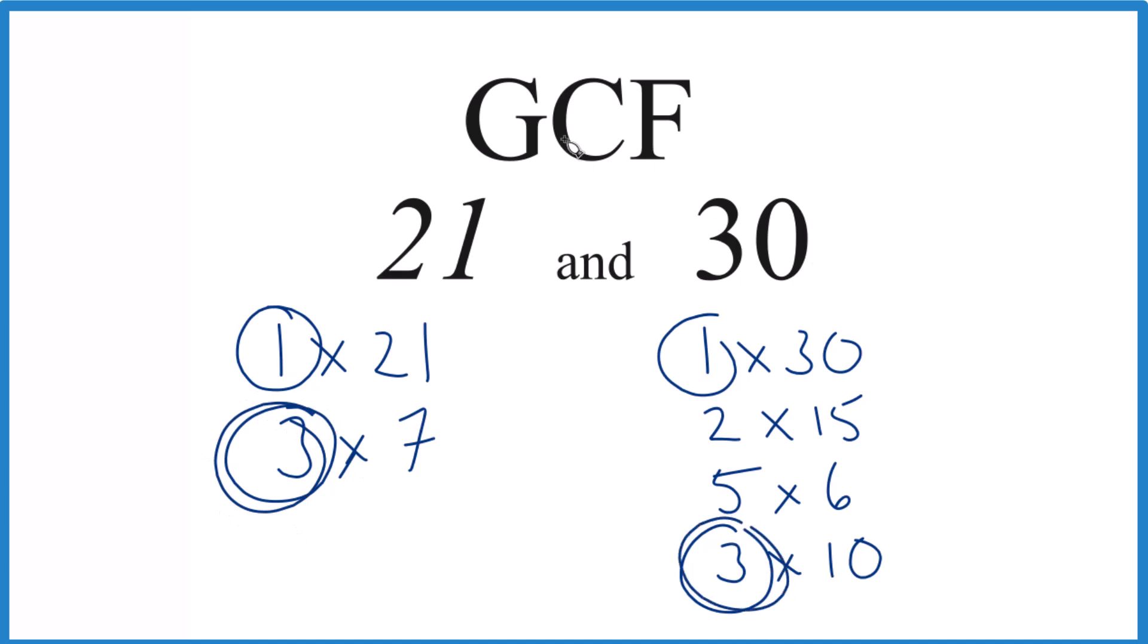So in answer to our question, the GCF for 21 and 30 is 3. There are other ways to do this, but for smaller numbers like this, it's probably the best way. This is Dr. B, thanks for watching.